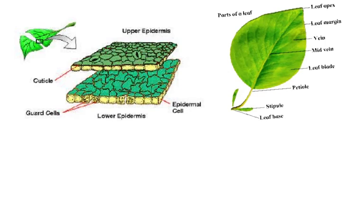Now coming to the parts of a leaf. The leaf is a very thin structure, so there is a short diffusion distance for carbon dioxide. The external parts include the petiole, the leaf blade, the mid vein or mid rib, the veins, the leaf margin, the leaf apex, the leaf base, and the stipules.